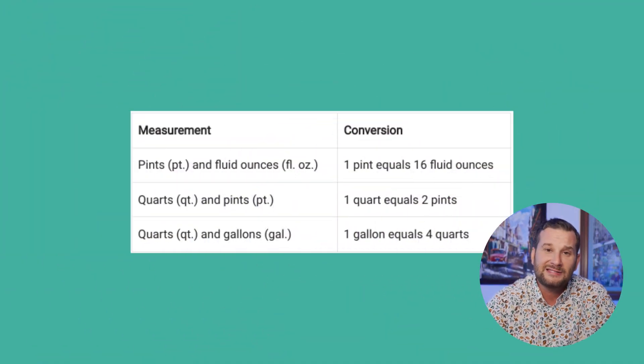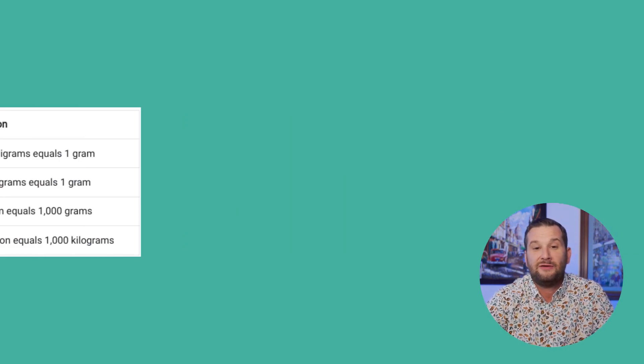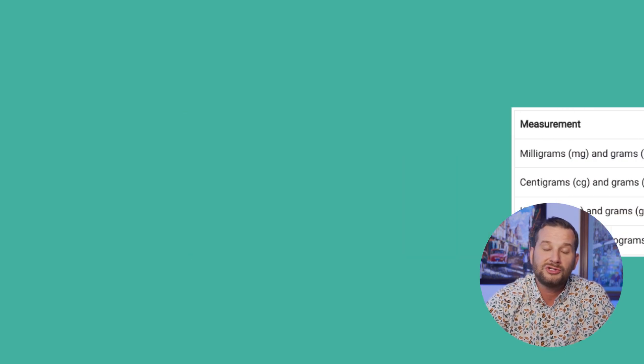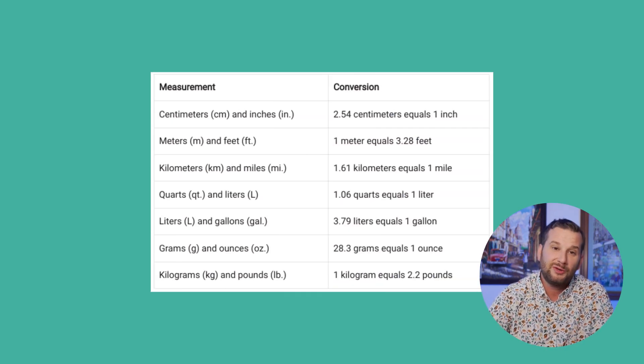Three of the biggest high-value topics — the elephants in the room — that you will see a lot of questions on are fractions, ratios and proportions, and word problems. Another tip: you are allowed to have blank scratch paper when you start the test, whether at a testing center or proctored online at home. Write down your key conversions — like Fahrenheit to Celsius, or one mile equals 1,760 yards — so they're quickly available.